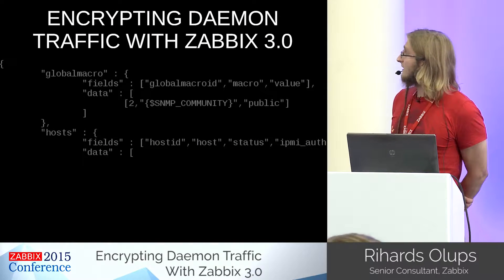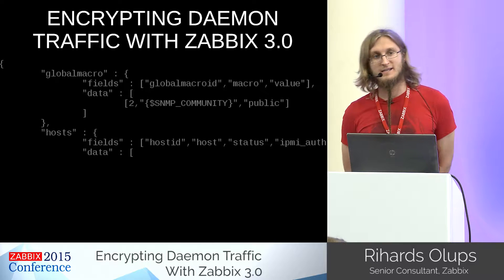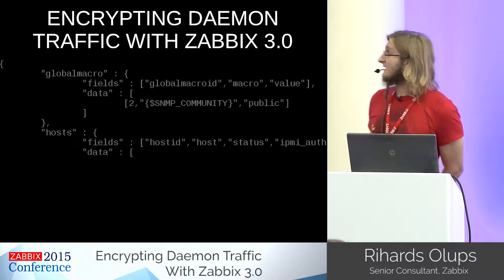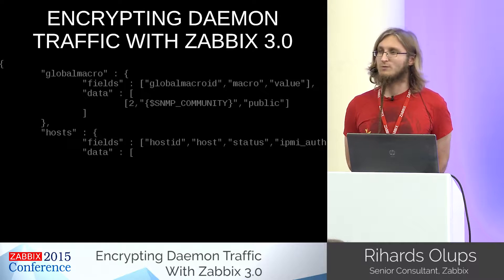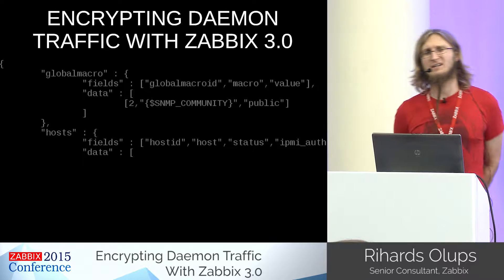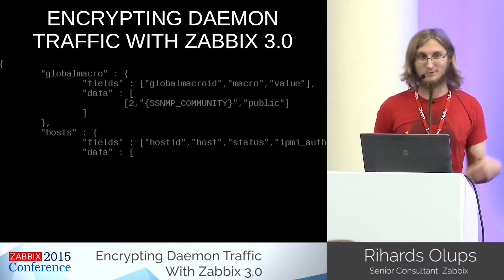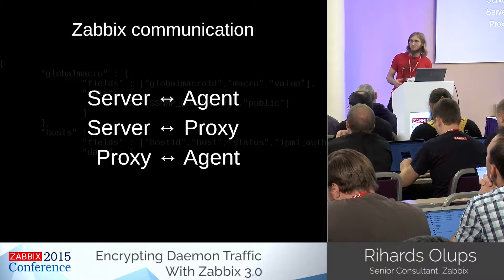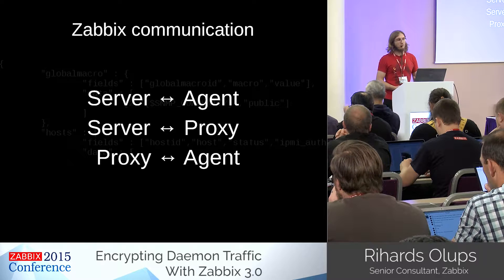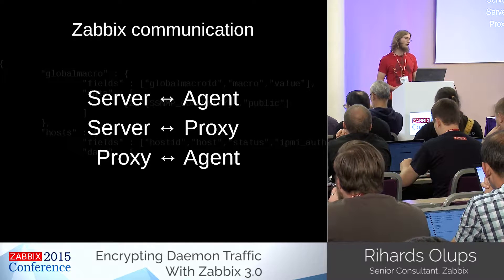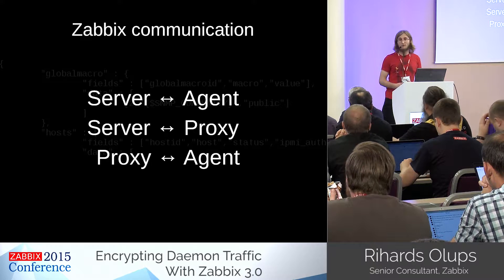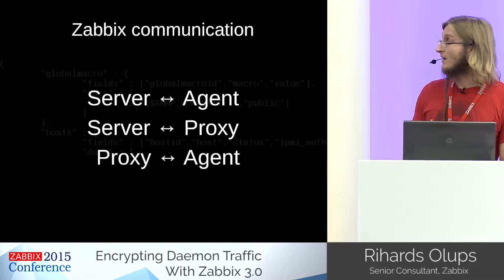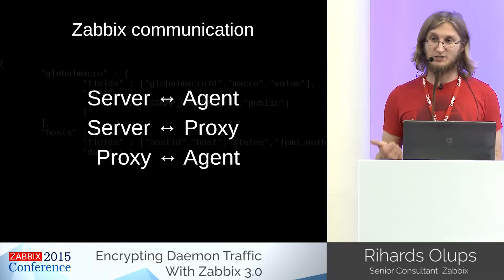These slides are about a feature not yet in the main trunk but heavily developed — encrypting the communication between Zabbix daemons, coming for Zabbix 3.0. The most widely used communication is between the Zabbix server and the Zabbix agent, and proxies are getting so popular we should mention them too: server to agent, server to proxy, and proxy to agent will all be supported for encryption.